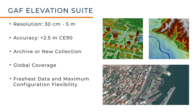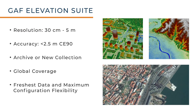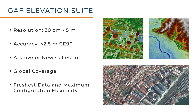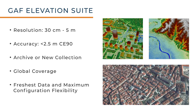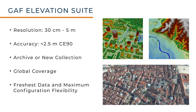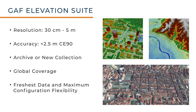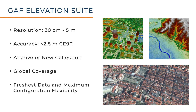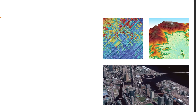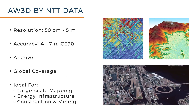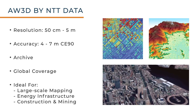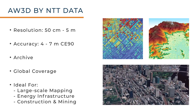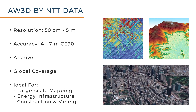The GAF Elevation Suite offers rapidly produced elevation models up to 30 cm resolution by leveraging multi-view imagery from either the archive or a new collection. Large areas can be easily covered at a lower 5-meter resolution by Euromaps 3D, a solution utilizing imagery from Cartosat-1. AW3D is a collection of elevation products ranging from 50 cm to 5-meter resolution, based on the combination of multi-view monoscopic images from a massive imagery archive.